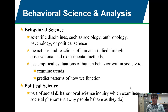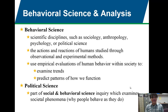These are scientific disciplines where we really study the actions and reactions of humans through observational and experimental methods. If you remember the scientific method from junior high, you make an observation, formulate a hypothesis, and then run an experiment to see if your hypothesis is true. That's really what these disciplines do — sociology, anthropology, psychology, and even political science. They use empirical evaluations, meaning statistical or factual evaluations of human behavior within society, to examine trends and predict patterns of how we function.